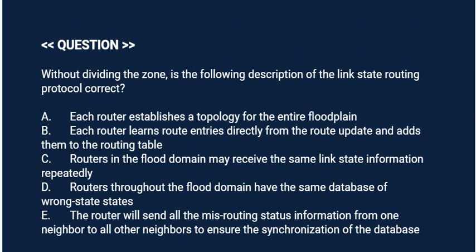Next question: Without dividing the zone, is the following description of the link state routing protocol correct? Option A: Each router establishes a topology for the entire flood domain. Option B: Each router learns route entries directly from route updates and adds them to the routing table. Option C: Routers in the flood domain may receive the same link state information repeatedly. Option D: Routers throughout the flood domain have the same link state database. Option E: The router will send all routing status information from one neighbor to all other neighbors to ensure database synchronization.